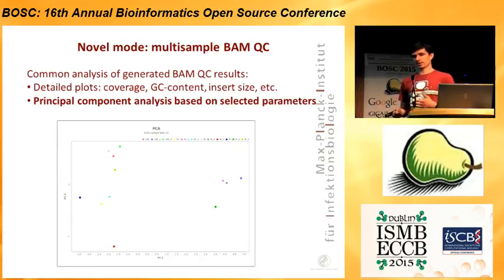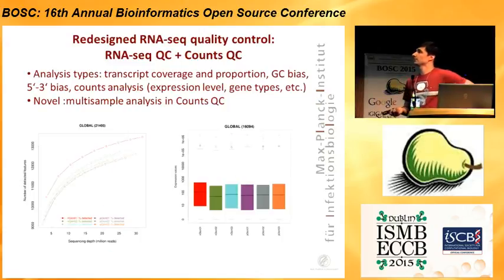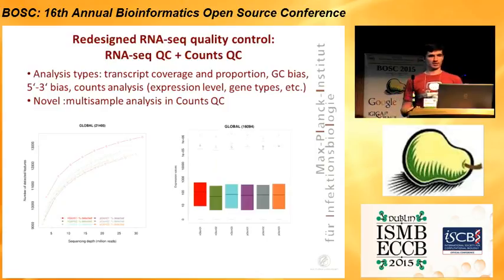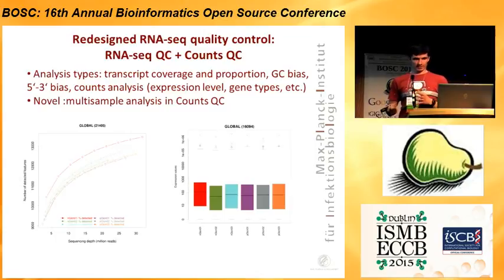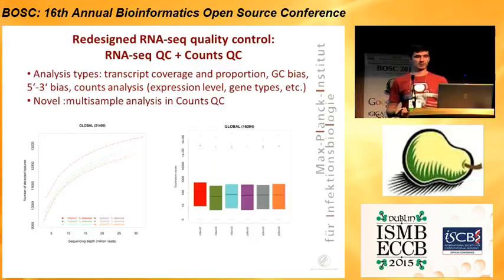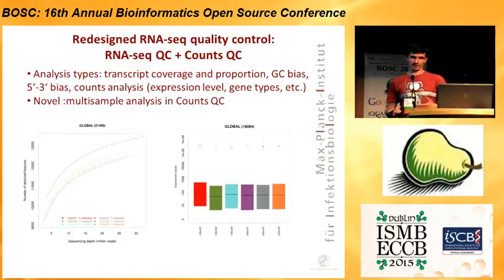Additionally, the RNA sequencing data analysis was also redesigned. Previously, the RNA-QC mode was similar to methods such as RSeQC. There was transcript coverage analysis, GC bias, 5' to 3' bias, and counts analysis. But now it is redesigned to support multiple samples and to compare them, including such things as expression level and gene types. This is also important when experiments include several samples and even different conditions.